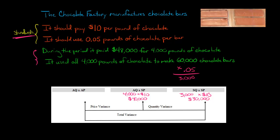Now we compare our $30,000 to our $40,000, and we see there's a $10,000 difference. Is this favorable or unfavorable? Our actual quantity was 4,000 pounds, but the standard says we should have only used 3,000 pounds. Somewhere, 1,000 pounds was wasted or lost, or maybe it was poor quality and had to be thrown away. So this is going to be an unfavorable variance of $10,000 — we used more chocolate than it should have taken to make this amount of chocolate bars.